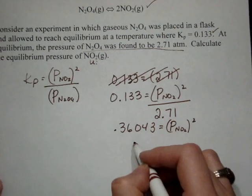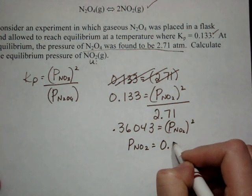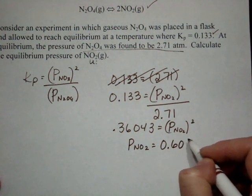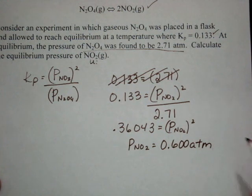And that gives me that the partial pressure of NO2 is 0.600 atmospheres.